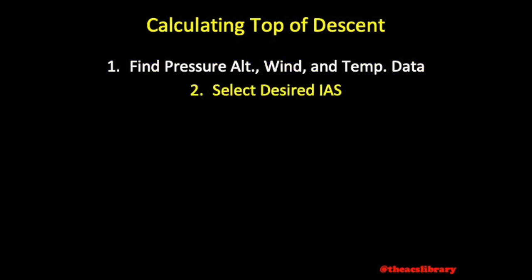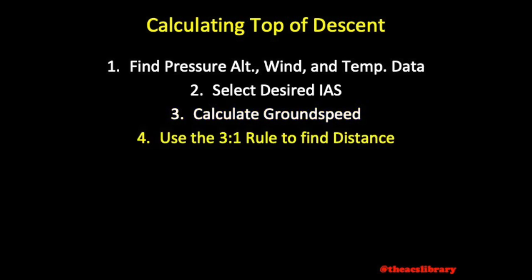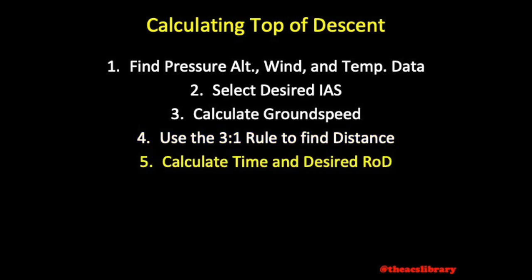Alternatively, we can select an indicated airspeed, calculate ground speed from there, and use the 3 to 1 rule. As long as we maintain a rate of descent equal to ground speed times 5, we can expect to travel 3 nautical miles for every 1,000 feet we descend. Once we have found distance, we use distance and ground speed to find time and desired descent rate. Lastly, we find fuel burn using our E6B.